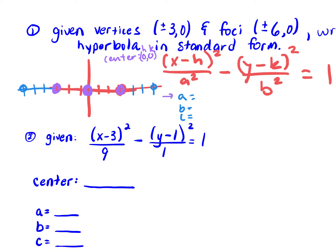Now we can figure out what our a is, because that's the distance from the center to a vertex. The distance from our center to a vertex is 3, so a is 3. C is the distance from the center to the foci. The distance from the center to the foci is 6, so c is 6.